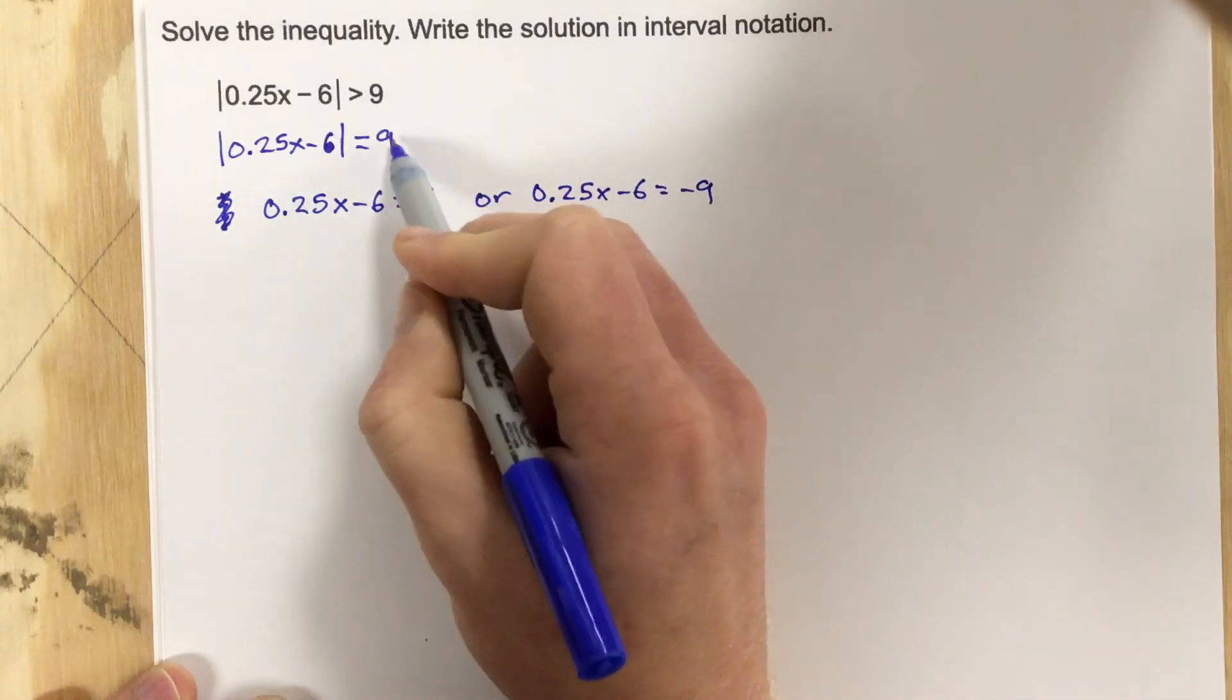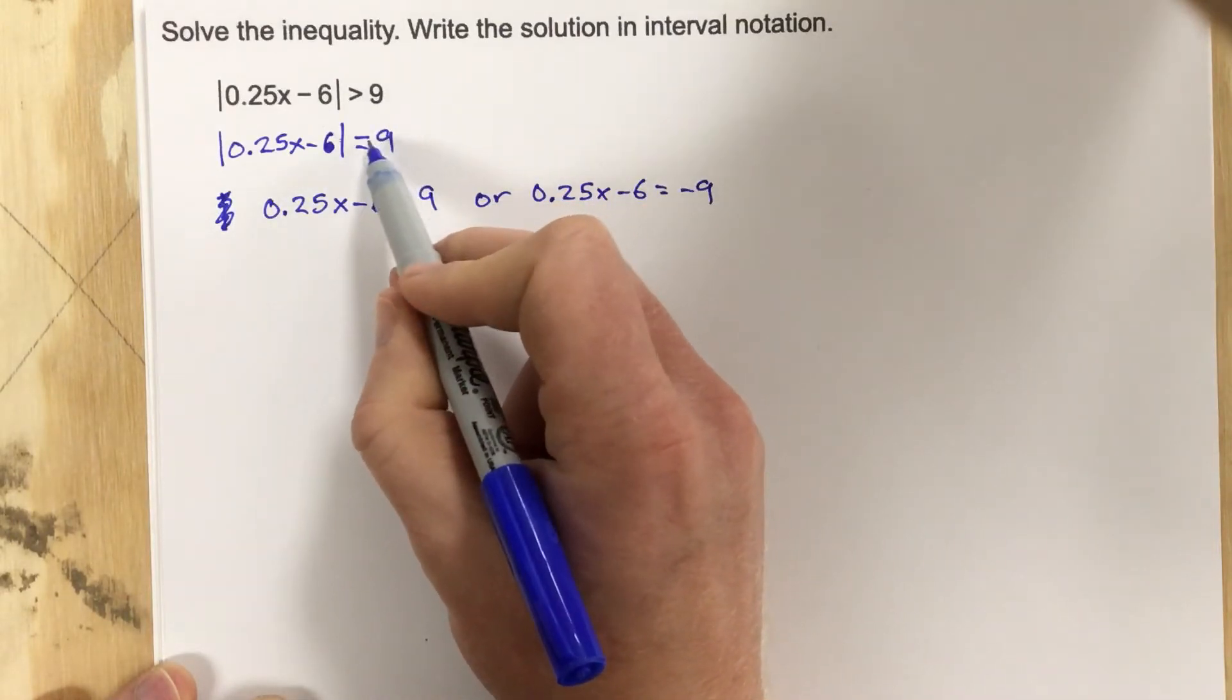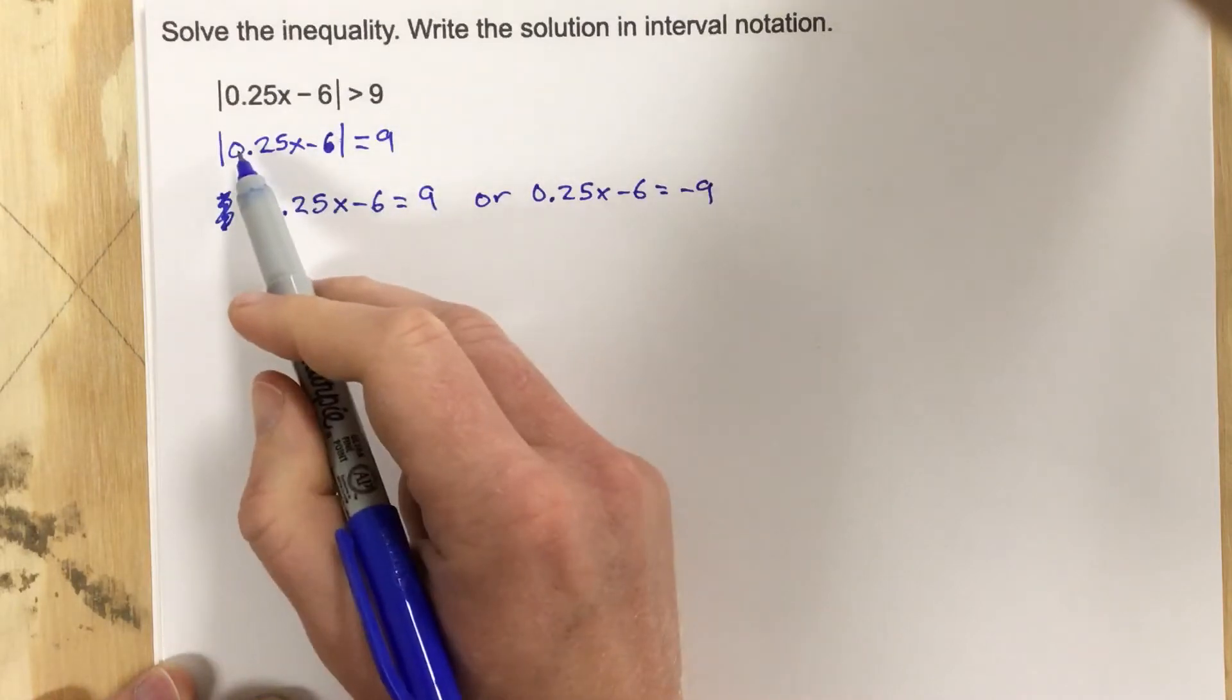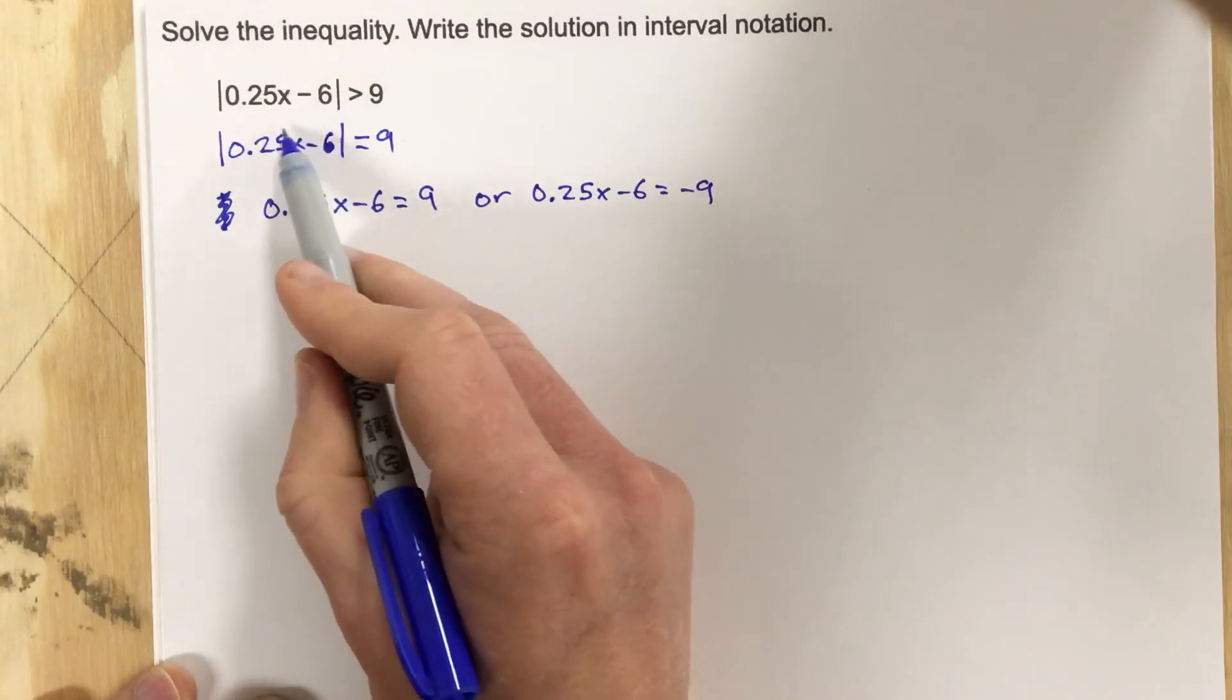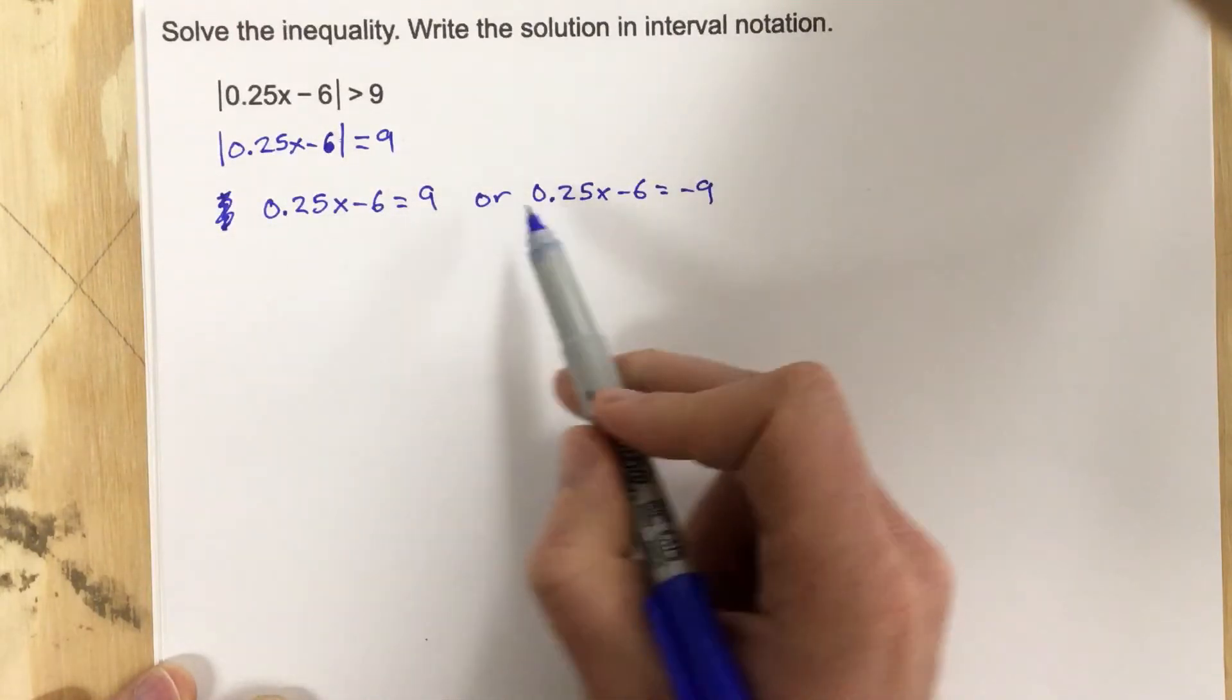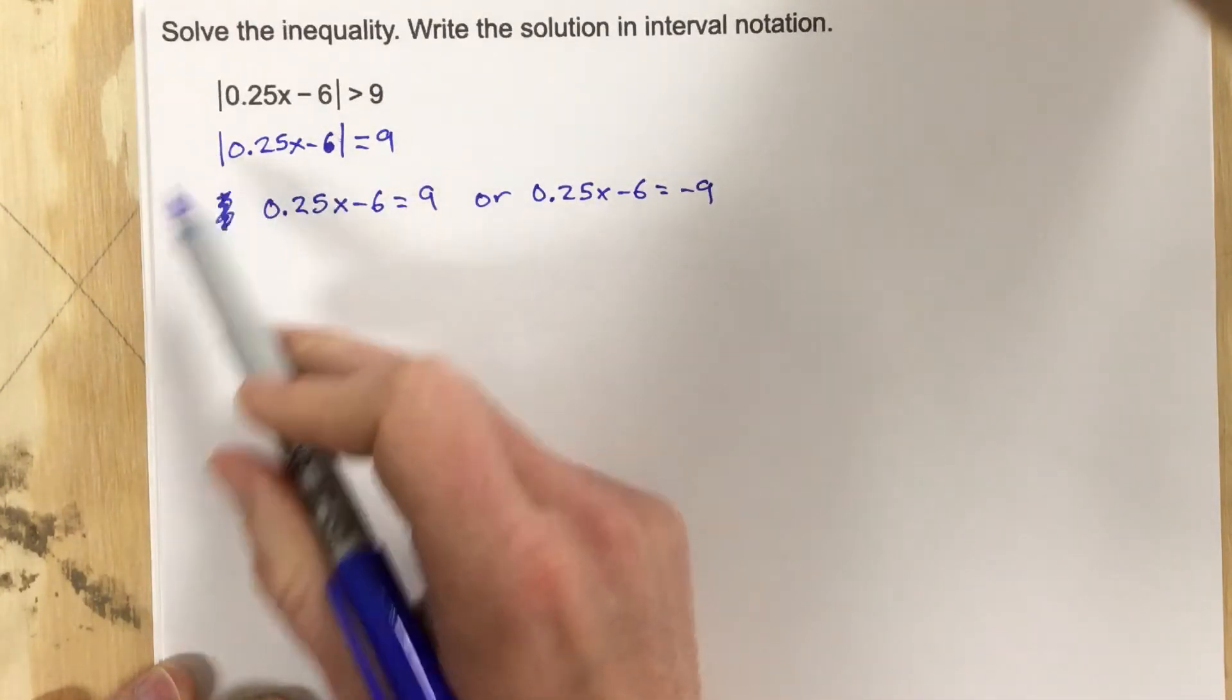Because in order for me to get a 9 out to the right here as a solution, as an equaling 9, that means 0.25x minus 6 has to produce inside the absolute value a 9, or it has to produce a negative 9. That's where you get your two equations. That's how you get rid of these absolute value signs.